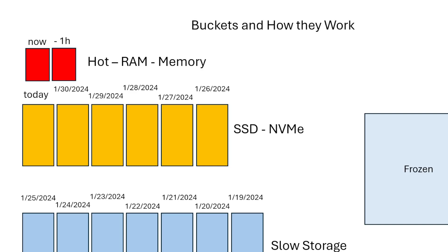When you search the data, that's why Splunk is a time-based search system — you put in your time, that's why it's the most effective. If you say I want to look for my logs from 1/25 to 1/24/2024, instead of looking across the entire giant set of data, it immediately looks at all the headers on each of these buckets and says these two buckets contain the data for that query.